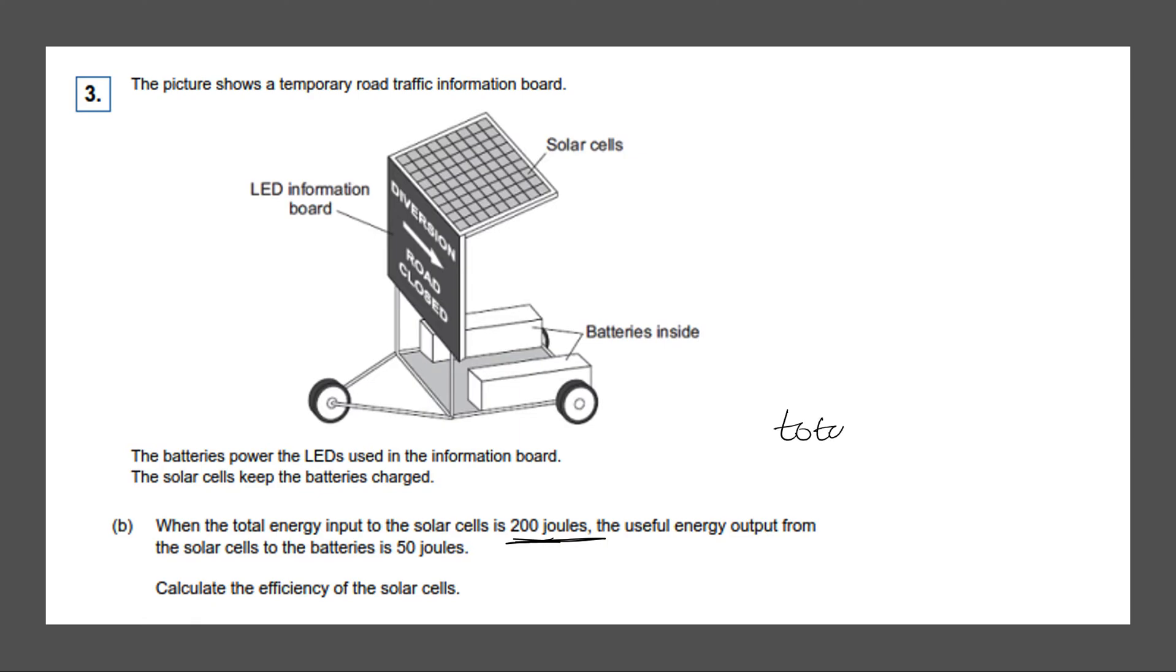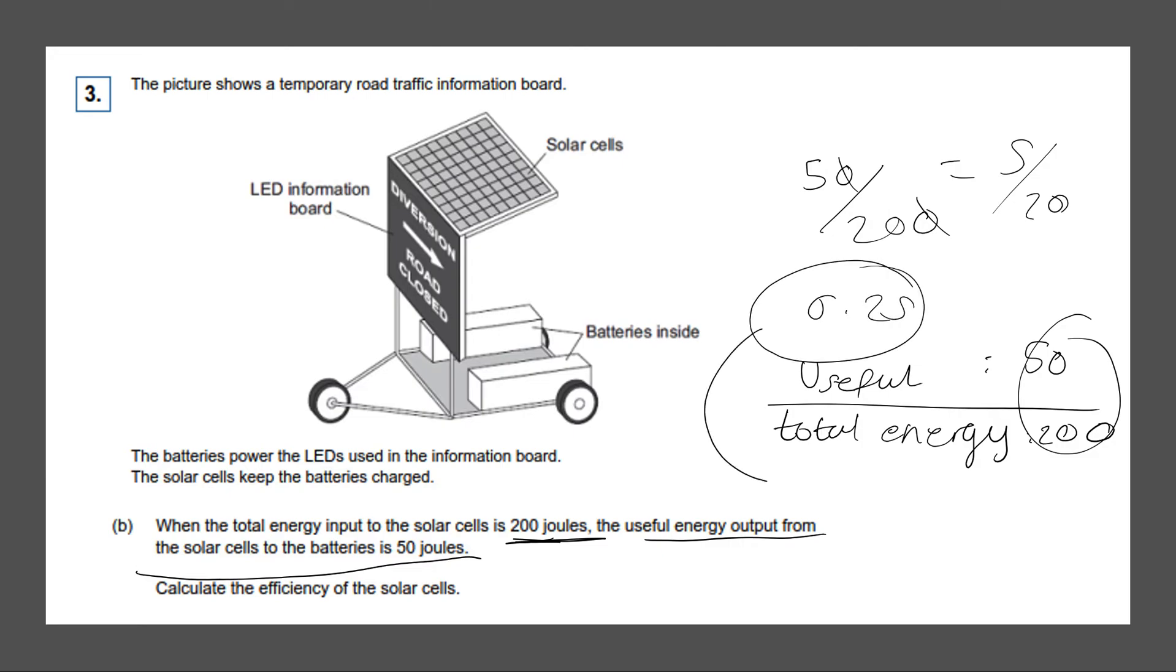So the total energy input is 200 joules. And the useful energy output from the solar cells to the battery is 50 joules. So useful is 50. So we have our fraction 50 over 200. Now we can just cancel these zeros out to become 5/20 and if we simplify that, it would give us 0.25. Again, we can leave our answer like that or we can multiply it by 100 so it turns into 25%. That is also acceptable.